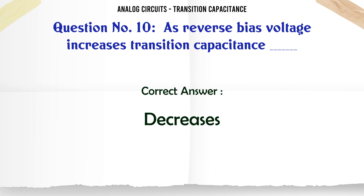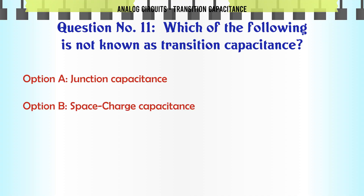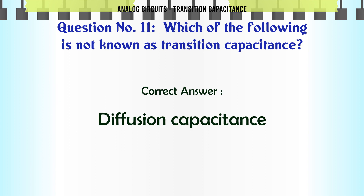Which of the following is not known as transition capacitance? A: Junction capacitance, B: Space charge capacitance, C: Diffusion capacitance, D: Barrier capacitance. The correct answer is Diffusion capacitance.